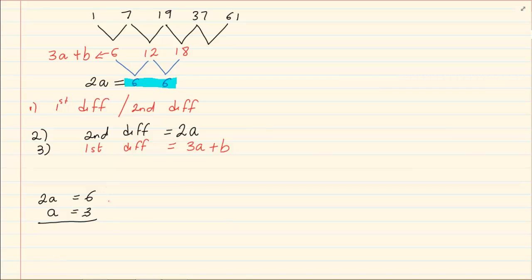Now you already have a. So if I say 3a plus b is equal to 6. Remember it's the first difference. I'm taking the first value that we had calculated. Not the second, not the third. The very first one that we had calculated. Now we're going to solve for b.